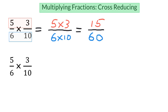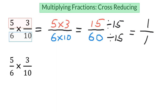And like before, we need to simplify. We need to find the greatest common factor. In this case, it's going to be 15. We're going to divide 15 by 15, and we're going to divide 60 by 15. 15 divided by 15 is 1, and 60 divided by 15 is 4. That is the strategy I taught you in the previous tutorial, and it will always work.